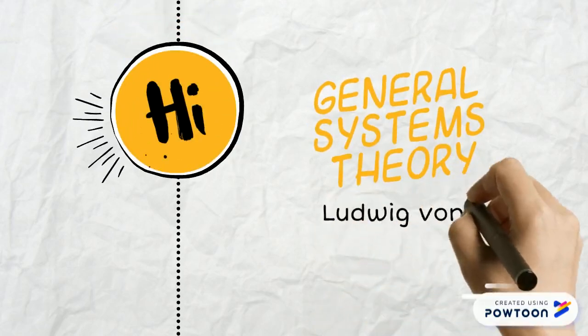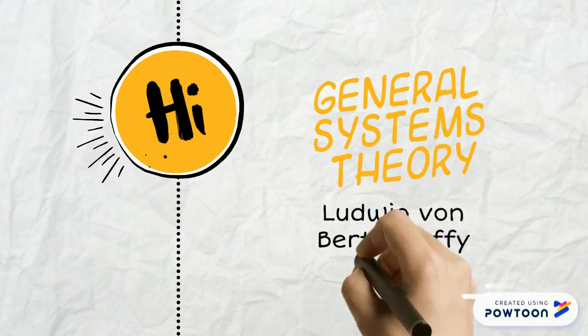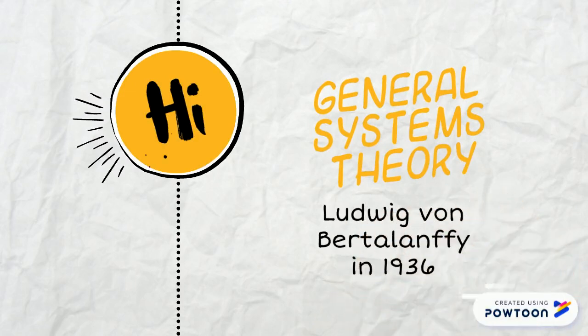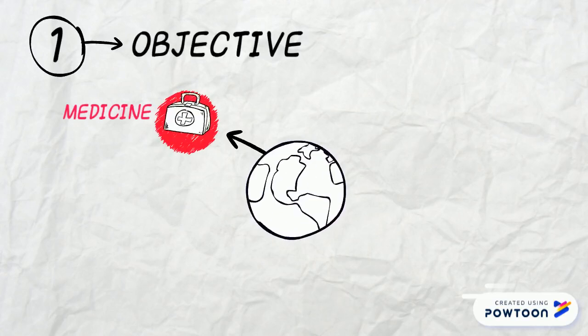General Systems Theory was proposed in 1936 by the biologist Ludwig von Bertalanffy and further developed by Ross Ashby. General Systems Theory is the interdisciplinary study of systems.